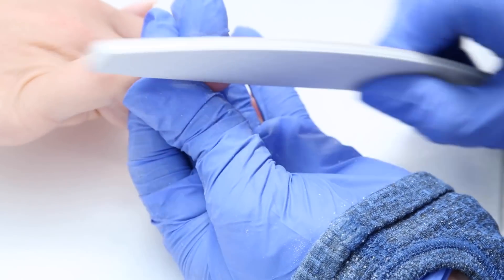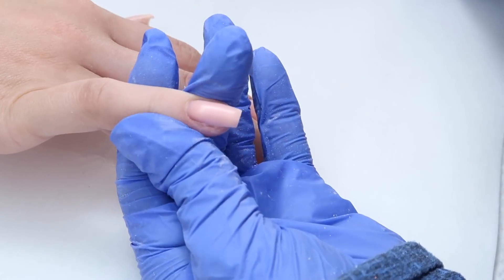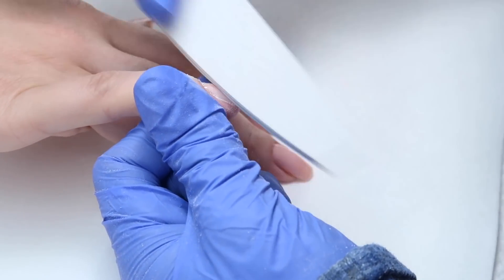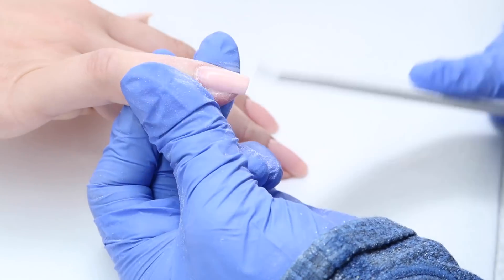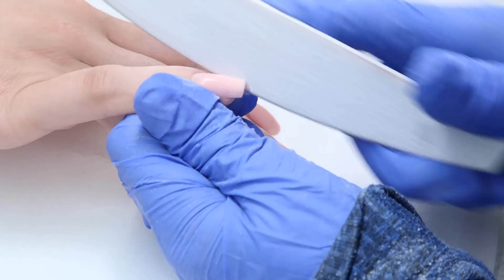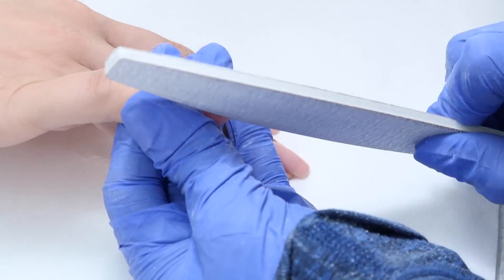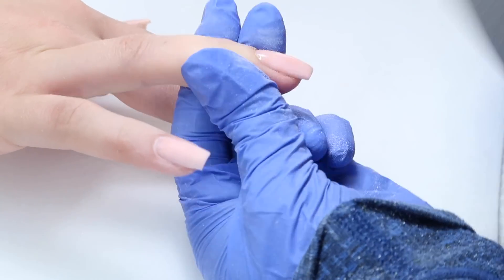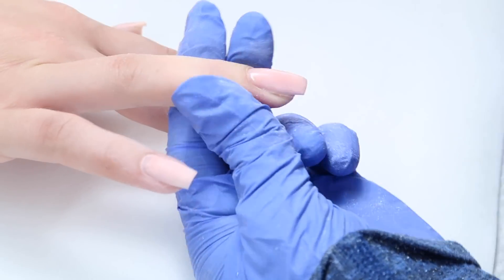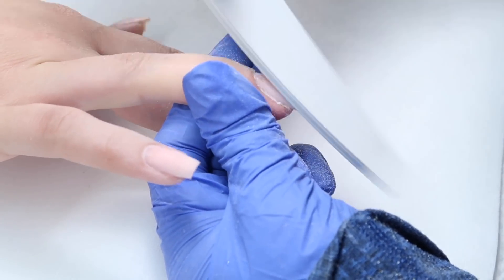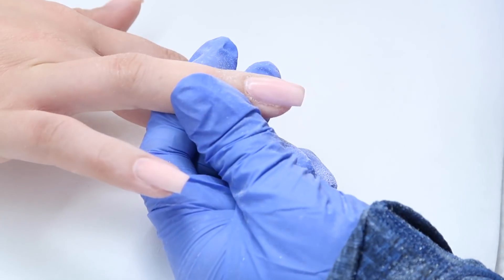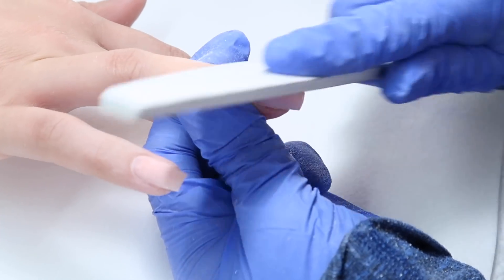Right now I'm just wiping off the tacky layer and I'm coming in with a 180 grit hand file. I'm filing the side walls, filing the free edge, then I go up around the left side and down on the right side. I just use my hand file to kind of even out the nails, make sure they're nice and even. It'll make it easier depending on what you're doing. I just like to make it as perfect and even as I possibly can.